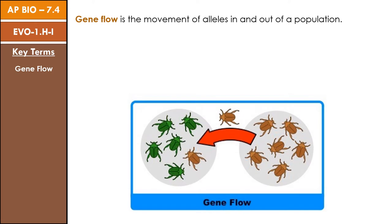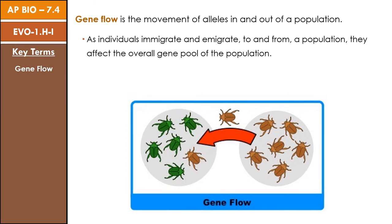The simplest of these mechanisms is gene flow, or the movement of alleles in and out of a population. When you have a set population of organisms, they're not likely to stay in the same place. They may immigrate and emigrate to and from the population. With them, because they contain alleles that were once a part of the gene pool, they take those alleles with them, affecting another population. If individuals enter into a population, they also bring their alleles with them, changing the allele frequencies of the given population as well.